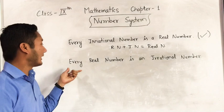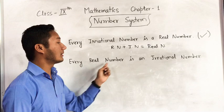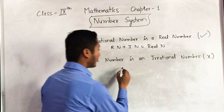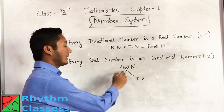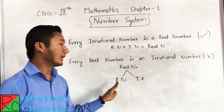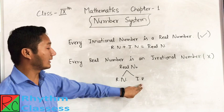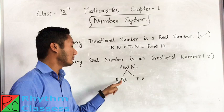The next point is: every real number is an irrational number. Can all real numbers be irrational? No, this is wrong. Why is it wrong? Because in real numbers you can see two parts — one is rational numbers and one is irrational numbers. If all real numbers were irrational, then rational numbers would not exist. Both rational and irrational numbers are real numbers.